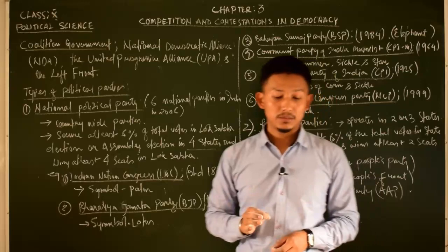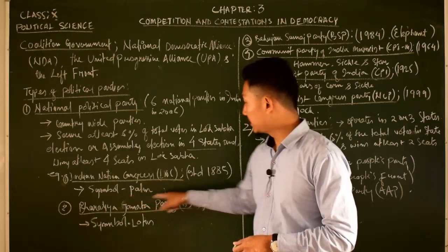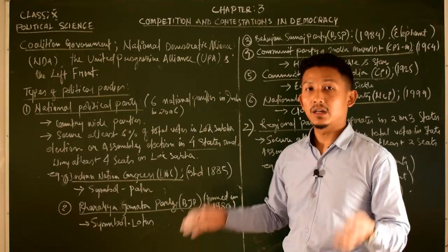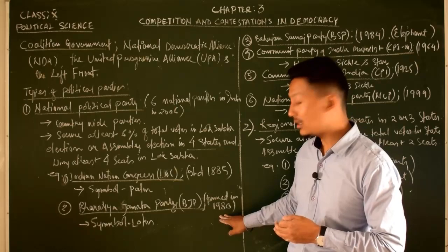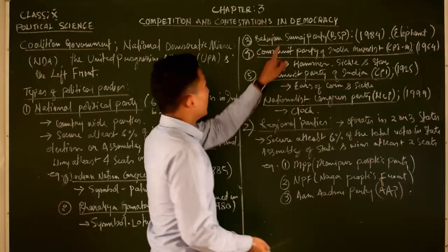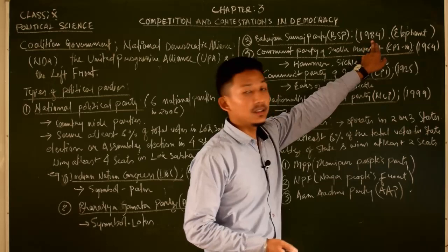The Indian National Congress, established in 1885, is a major national party. BJP was formed in 1980, with the lotus as its symbol. BSP was established in 1984. The Communist Party of India Marxist, CPI(M), was established in 1964.